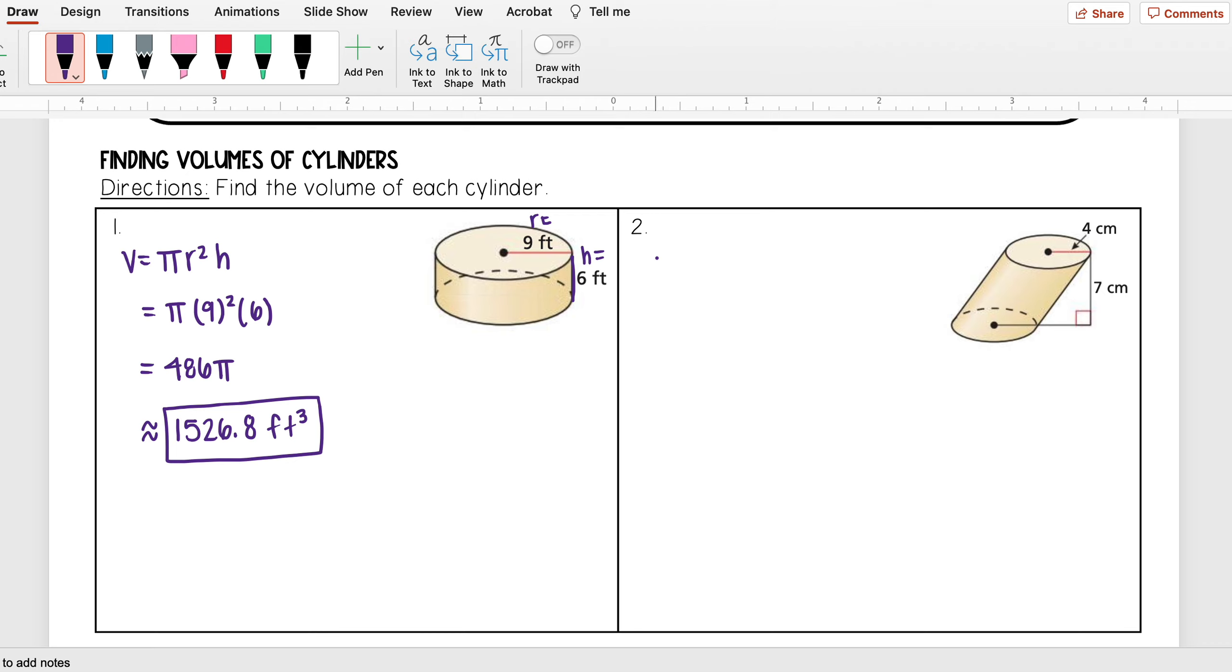Okay, looking at this next one, I want to find the volume of this cylinder. So I have volume is equal to pi r squared h. Here my radius I see is 4, and my height, which is connecting my two bases, is 7.